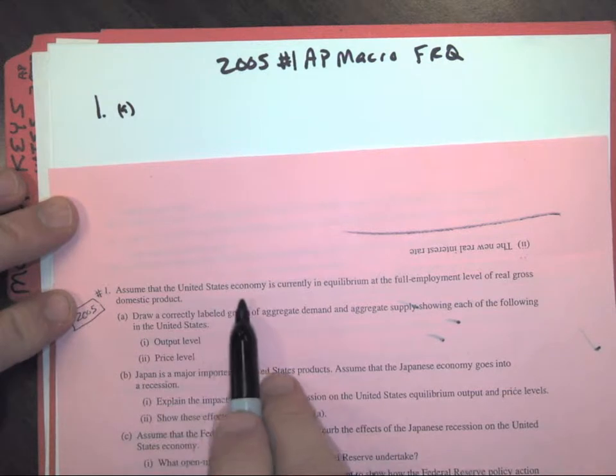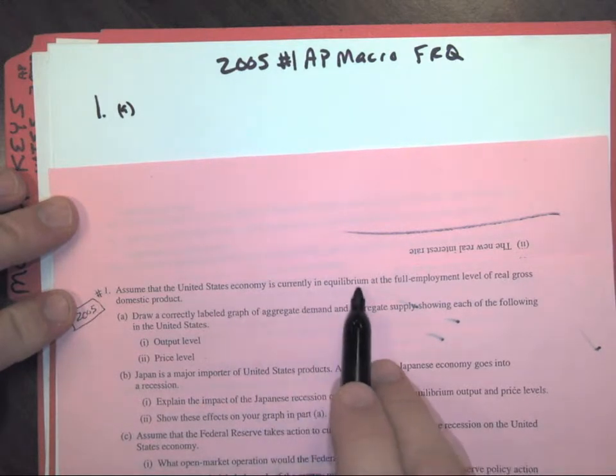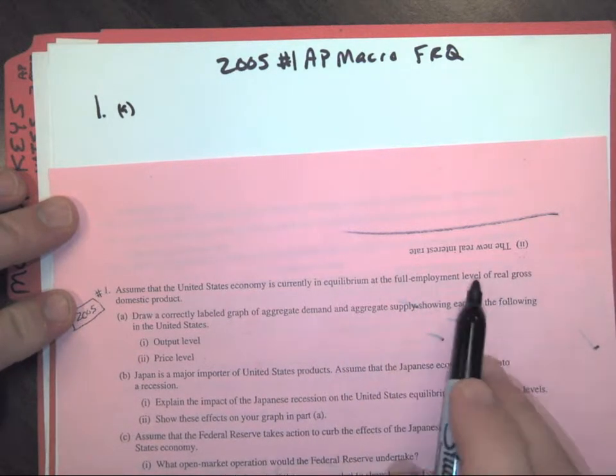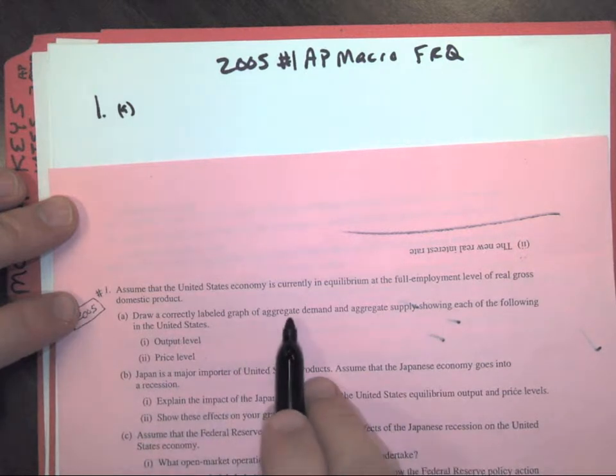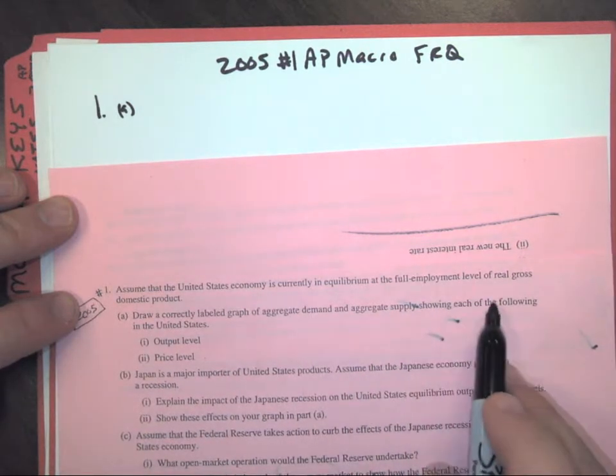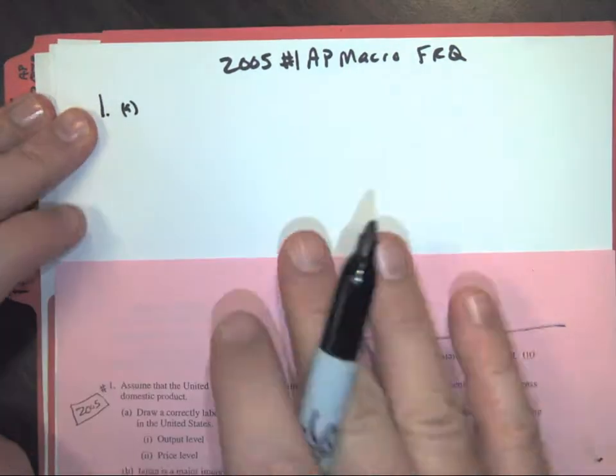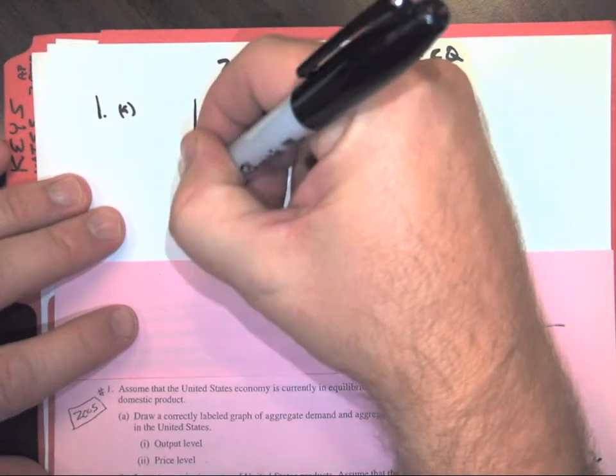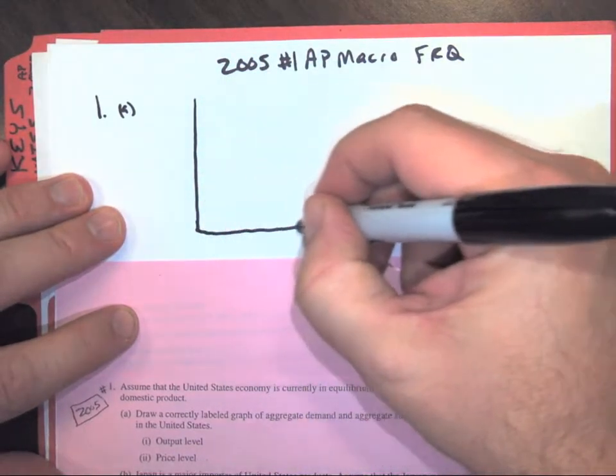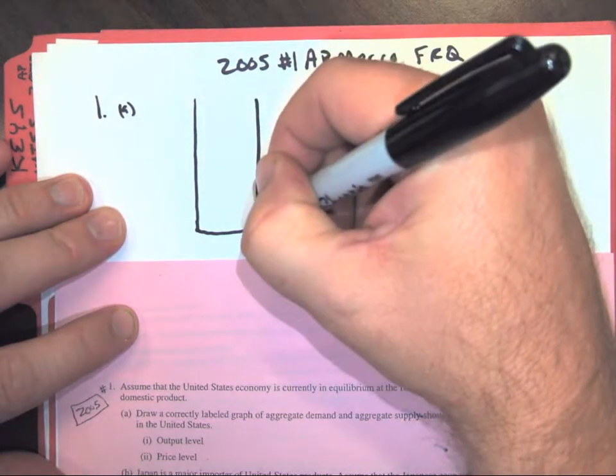So it says, assume that the United States economy is currently in equilibrium at the full employment level of real GDP. Draw a correctly labeled graph of aggregate demand and aggregate supply showing each of the following in the United States: output level and price level. So this is one of the three economies that you'd set up - recession, full employment, or inflation. This one is at full employment.